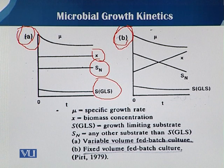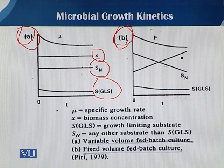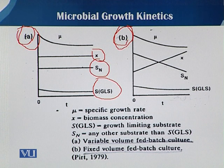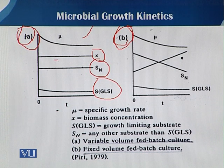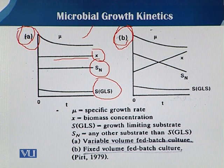In the variable volume case, there is a small drift in the mu line when feeding begins, and then mu becomes constant. X remains constant because D equals mu, and that remains constant unless the dilution rate or flow rate is disturbed.